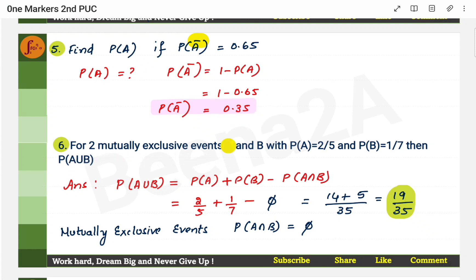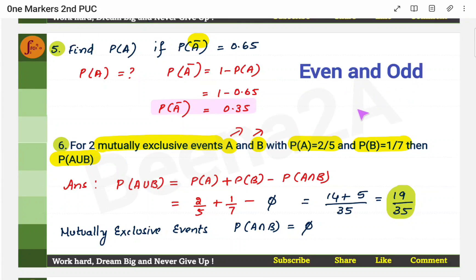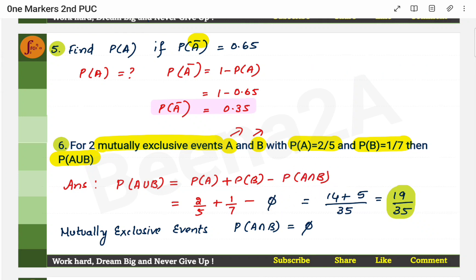For two mutually exclusive events A and B, where probability of A and probability of B are given, find the probability of A or B. Remember: mutually exclusive means either A or B can happen — both cannot happen together. For example, when a die is thrown, you cannot get both an even and an odd number simultaneously. For mutually exclusive events, probability of A and B is zero (empty set). So, P(A or B) equals probability of A plus probability of B minus zero, giving just probability of A plus probability of B.